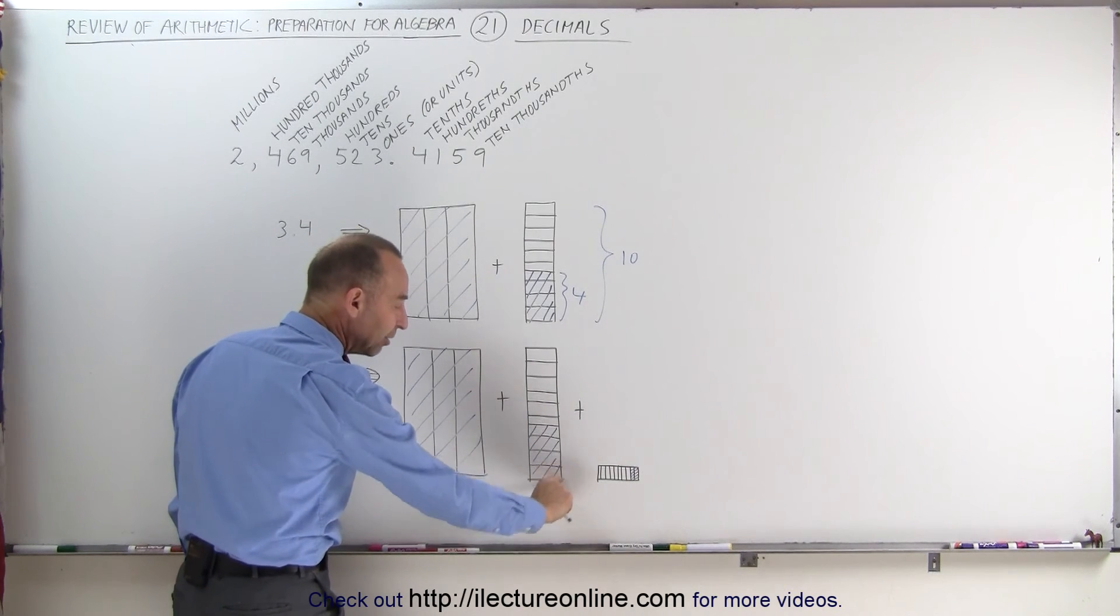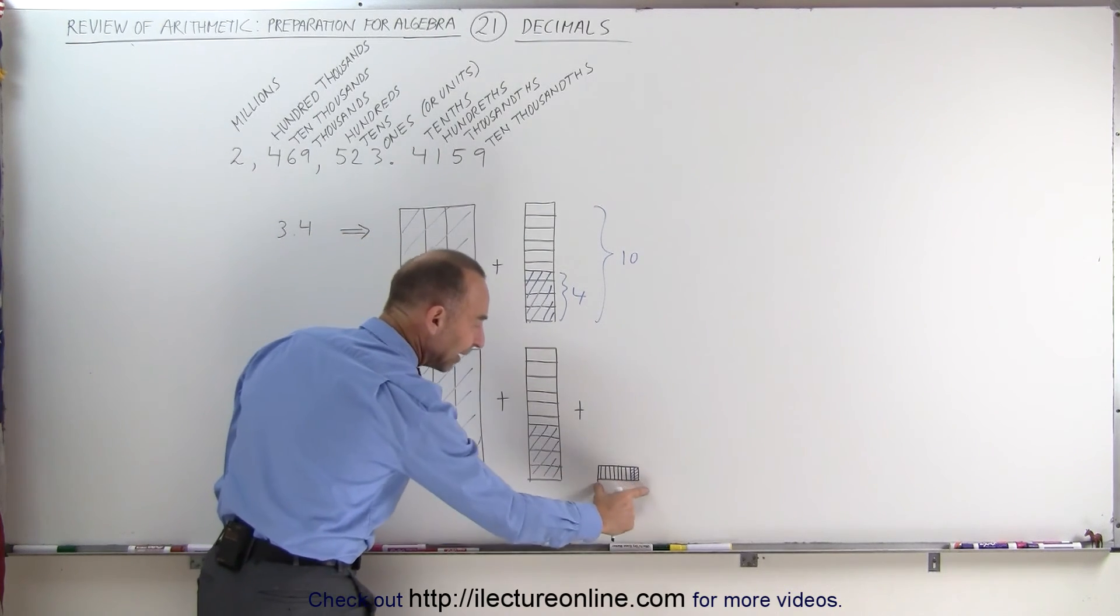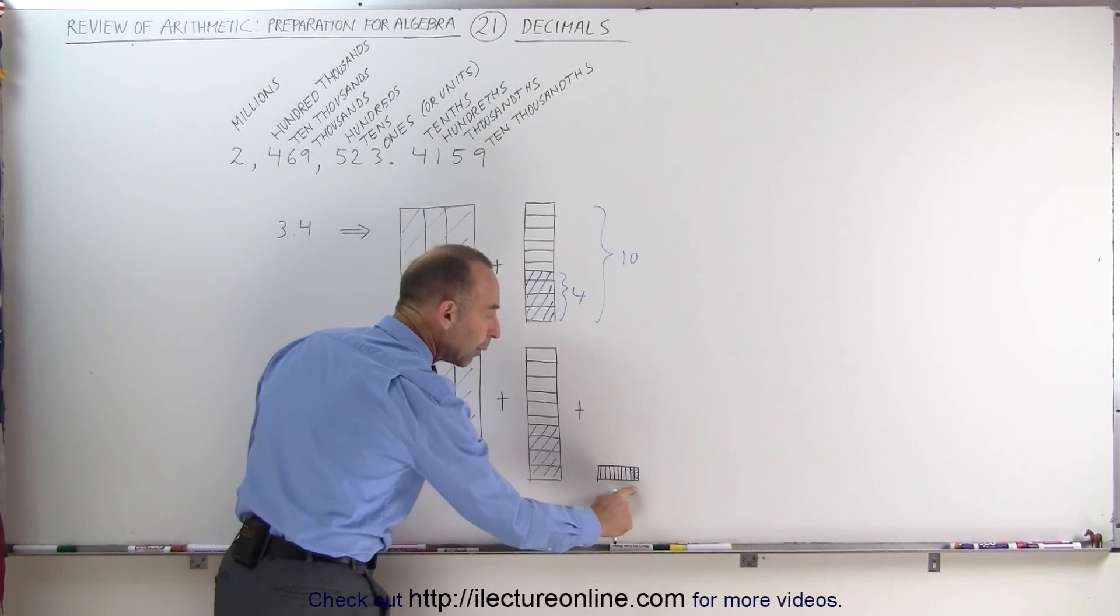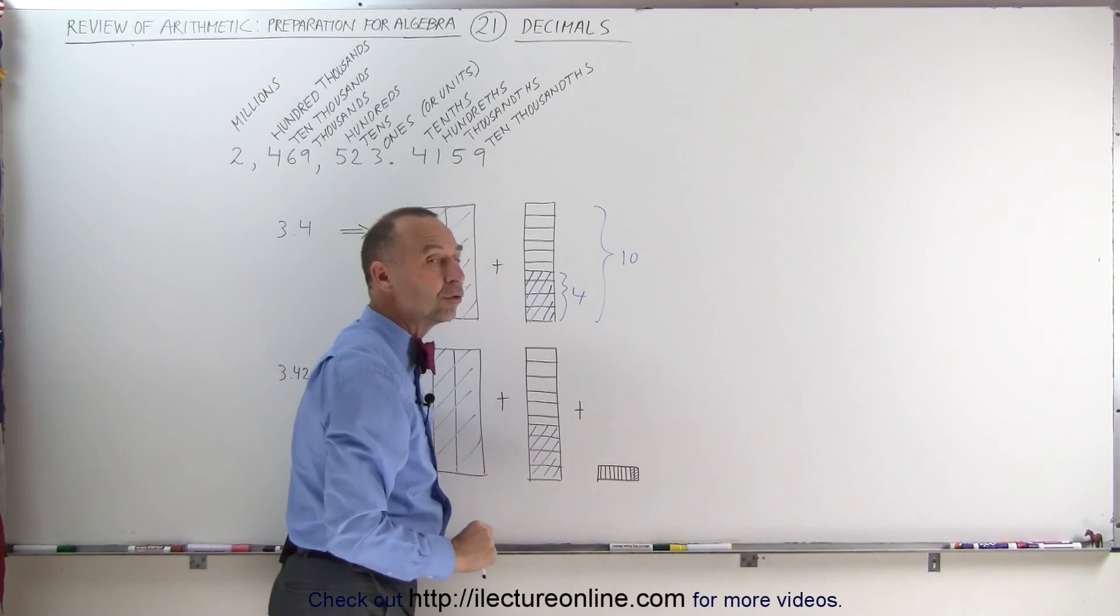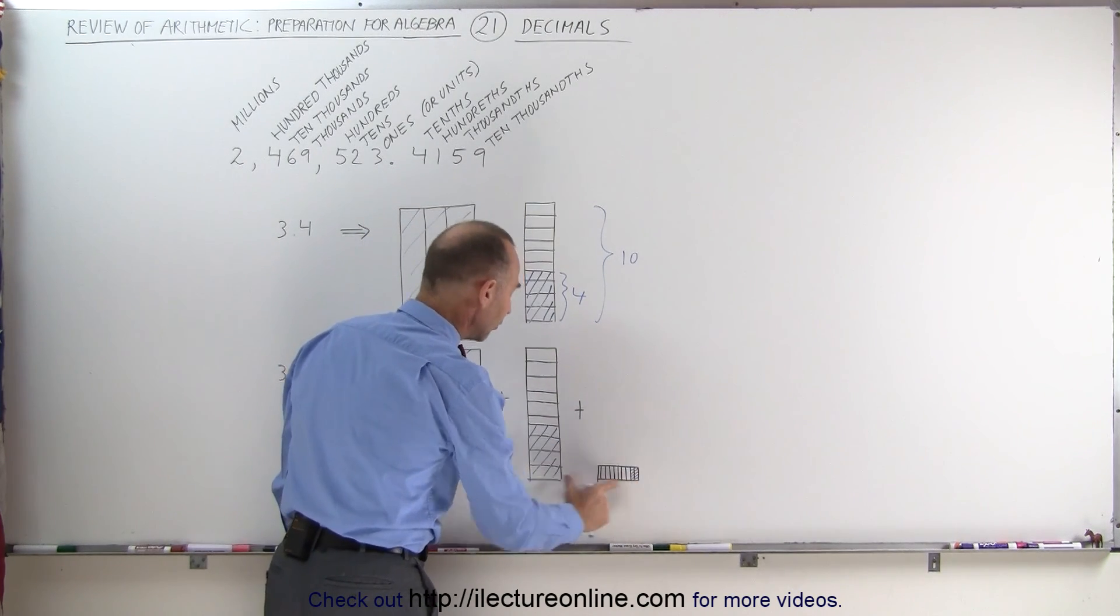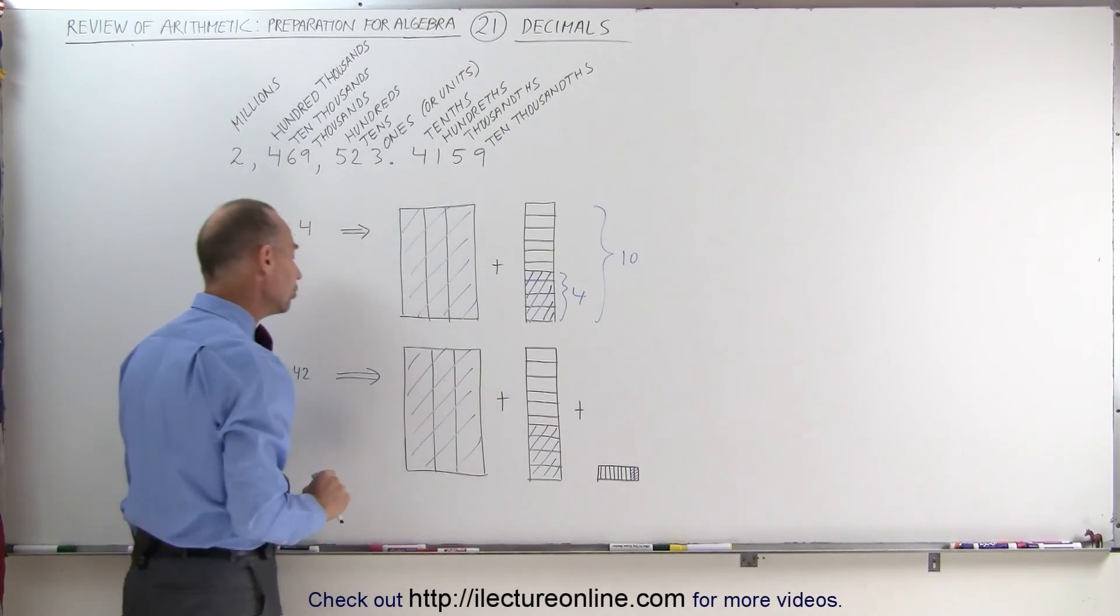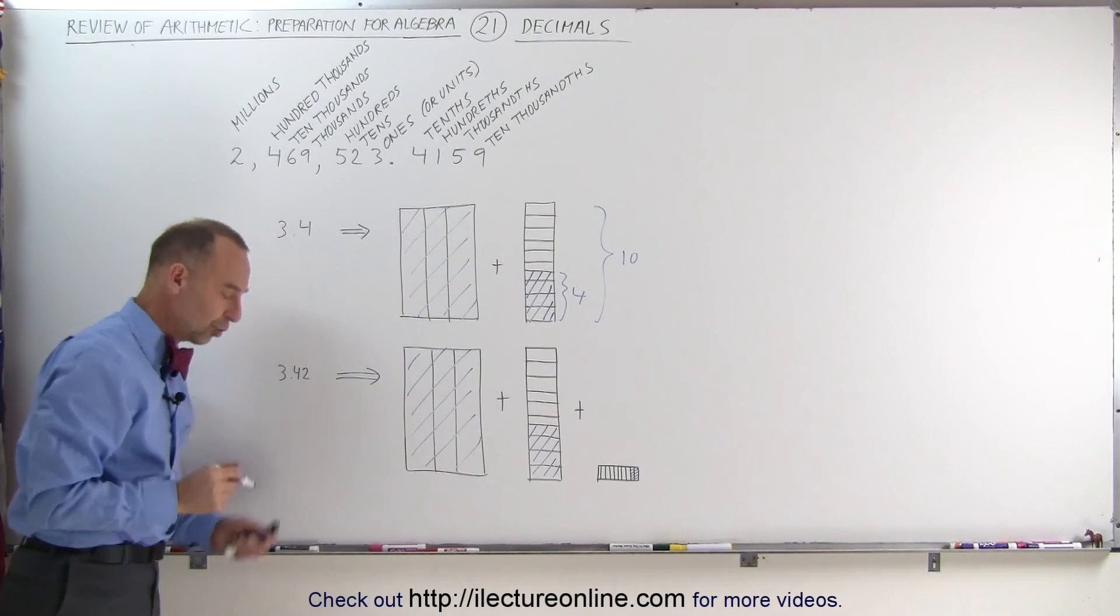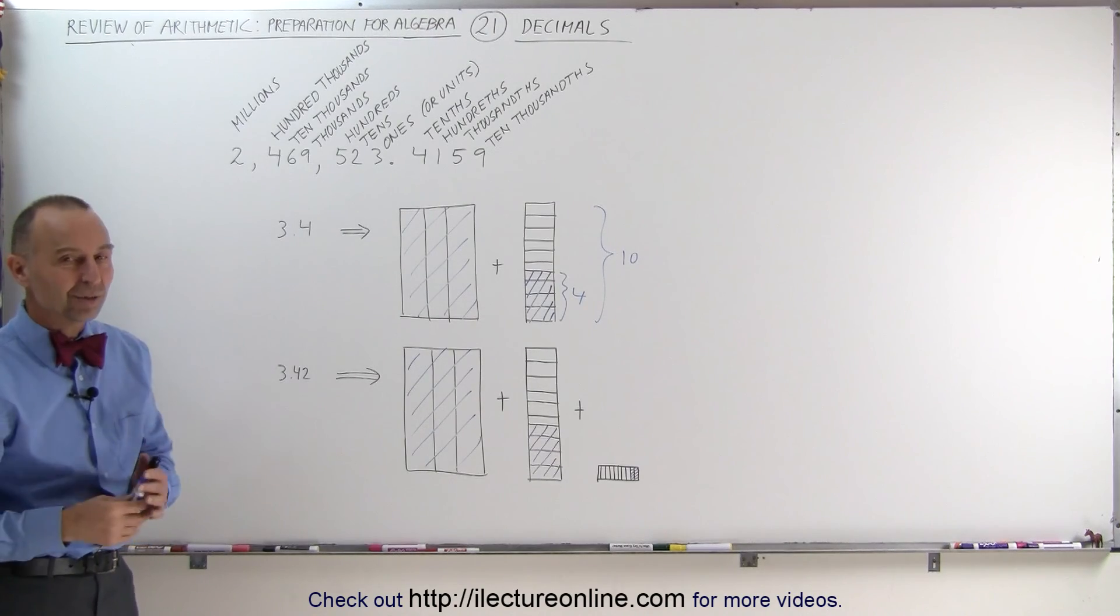And then you take one-tenth of those, of one-tenth piece, divide it into 10 equal pieces. Those are now hundredths, and we have 2 of those, 2 one-hundredths, 4 tenths, and 3 whole units is written as 3.42. That's what we mean by a decimal.